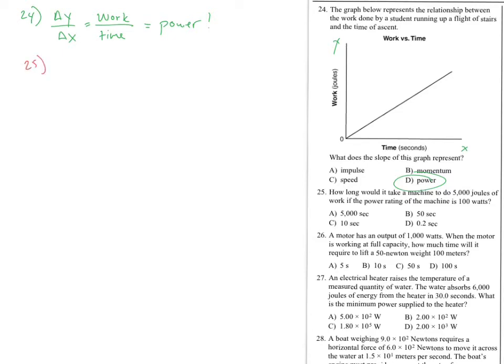Number 25. Looking for time. How long would it take to do 5,000 joules of work if the power rating of the machine is 100 watts. Alright. We have 100 watts as our power. We have our work as 5,000 joules. Looking for time. Simple plug and chug. We have 100 watts is equal to 5,000 joules over time. Time is 5,000 divided by 100. That is 50. 50 seconds. Choice B.